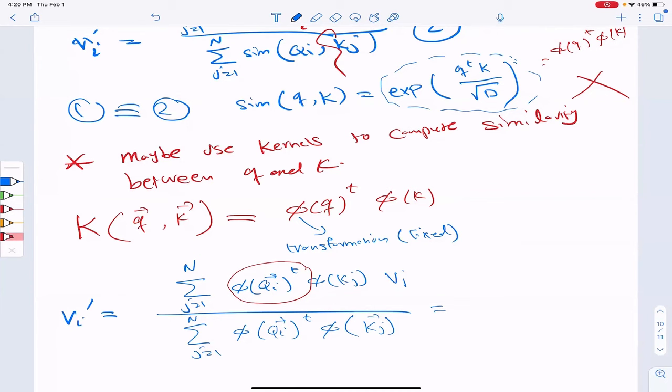So what do I get? I get this formula, transform value of QI multiplied by the summation 1 to N. Transform version of QI multiplied by the summation.